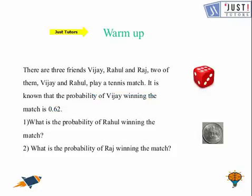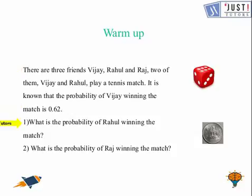Here's a warm up for you. What you can do is pause the video and try these two questions. Assuming that you have done it, now we can discuss the answer. Here there are three friends Vijay, Rahul and Raj. Two of them, Vijay and Rahul, play a tennis match. It is known that the probability of Vijay winning the match is 0.62. So we need to find the probability of Rahul winning the match. We will take away 0.62 from 1 and we will get the answer as 0.38.